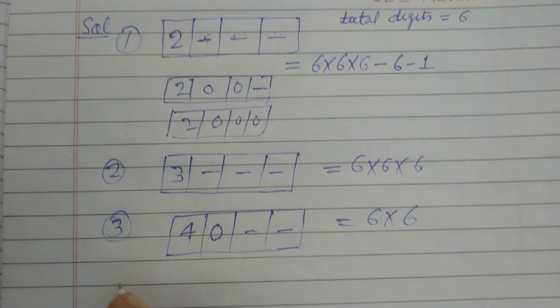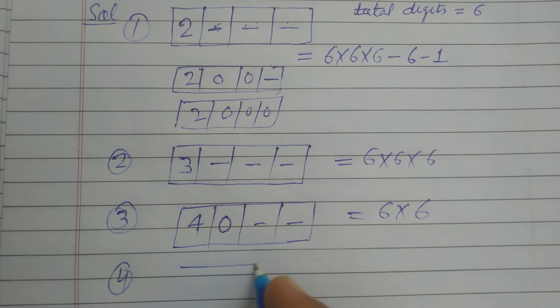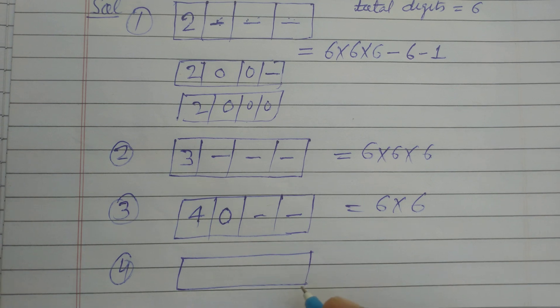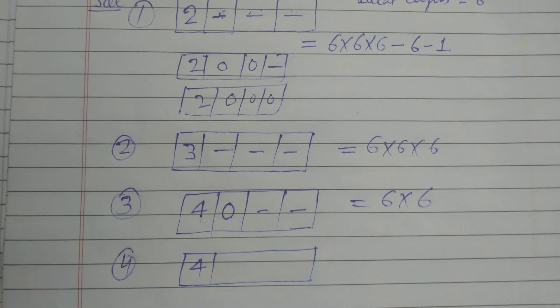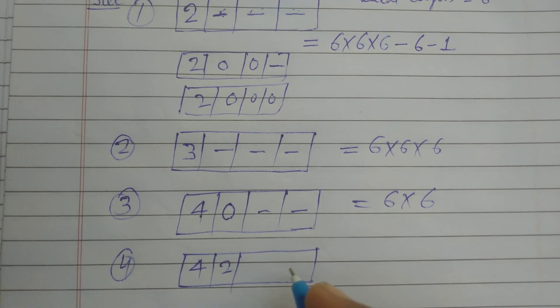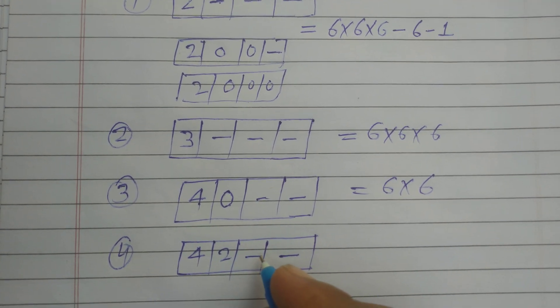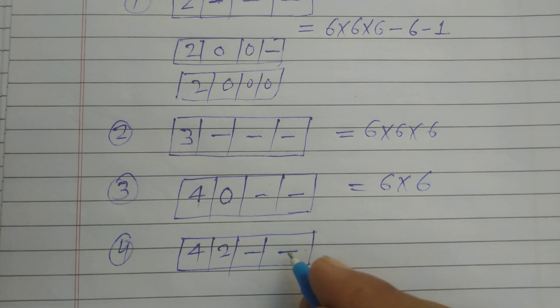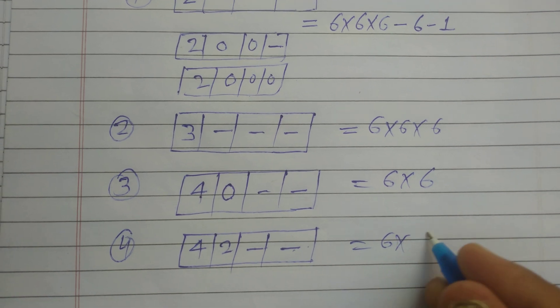Fourth is when 4 at 1000 place and here is 2, then we can fill these two boxes by 6 into 6 ways.